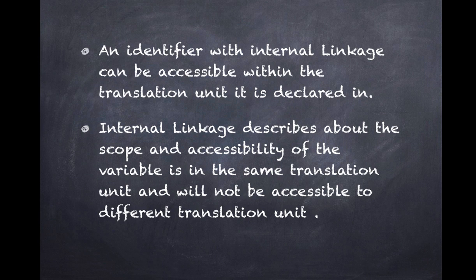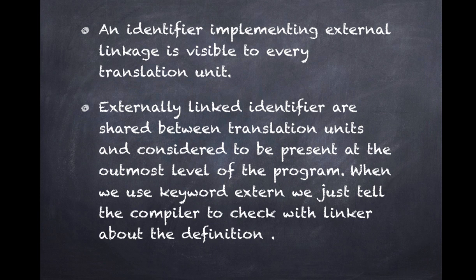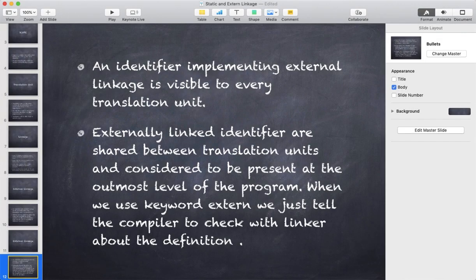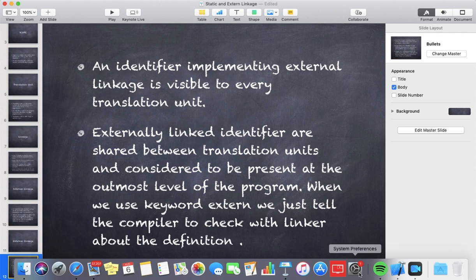An identifier with internal linkage will not be accessed from a different translation unit. In contrast, an identifier implementing external linkage is visible to every translation unit — it is shared throughout all the translation units. It is at the outermost level of the program. When you use the keyword 'extern', you tell the compiler to check for the identifier via the linker.